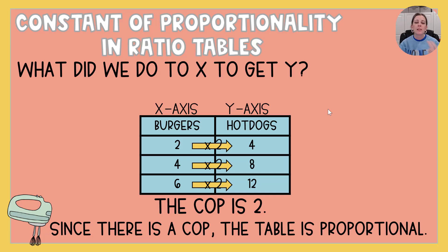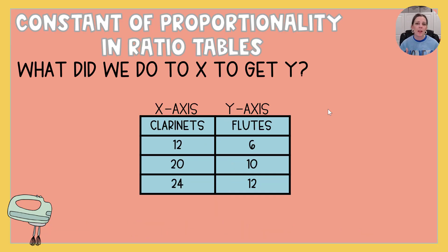Okay let's look at another one. Clarinets to flutes. X axis to y axis. What are we doing to the clarinets to figure out how many flutes there are? This one's also fairly simple to see. Twelve multiplied by one half is six. Twenty multiplied by one half is ten. And twenty-four multiplied by one half is twelve.